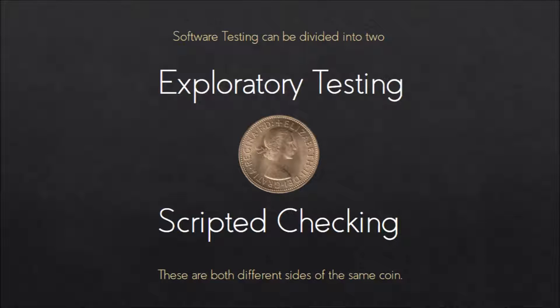Software testing can be divided into two — quite controversial. We have exploratory testing, which is the kind I was doing in games testing, and scripted checking. I've deliberately put 'scripted checking' rather than 'scripted testing.' It's a controversial topic in the community right now. Two experts, Michael Bolton — not the singer — and James Bach wrote a white paper where they said if it can be done by a machine, it's not testing, it's checking.